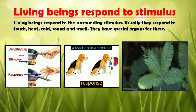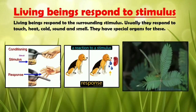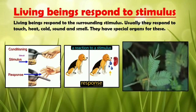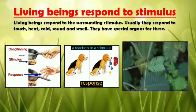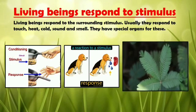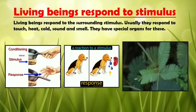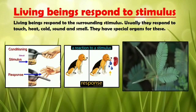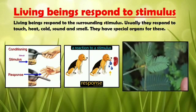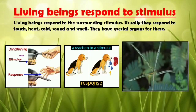Next, living beings respond to stimulus. Living beings respond to the surrounding stimulus — usually to touch, heat, cold, sound and smell. They have special organs for these. For example, when we touch a hot bowl we remove our hands — we are responding to the heat stimulus. A dog sitting quietly will start to salivate when it sees meat — the dog is responding to stimulus. In the touch-me-not plant, when touched by a person or insect, the leaves start closing because the plant is responding to stimulus.